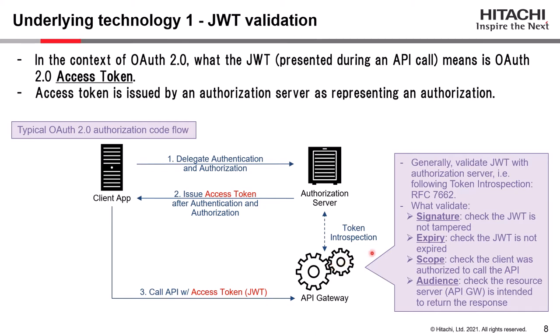What is validated includes, for example, the signature — validating the signature lets us check the JWT has not been tampered with. Validating scopes lets us check the client was authorized to call the API. Validating the audience lets us check which resource server or API gateway is intended to return the resource. This is JWT validation.